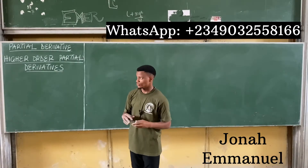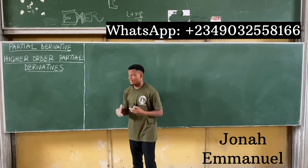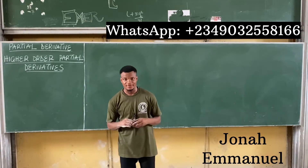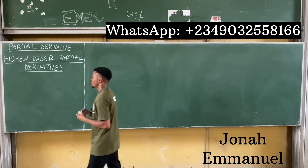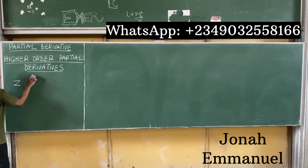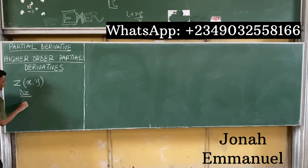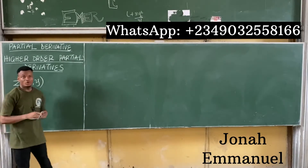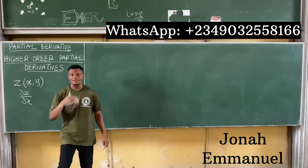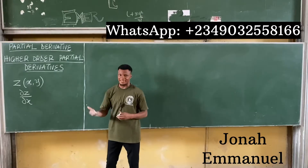Hello there and welcome to today's class. For today's class we'll be looking at higher order partial derivatives. If I'm given a function z in terms of x and y, we can get something that looks like partial z over partial x. This is called the first partial derivative of z with respect to x.